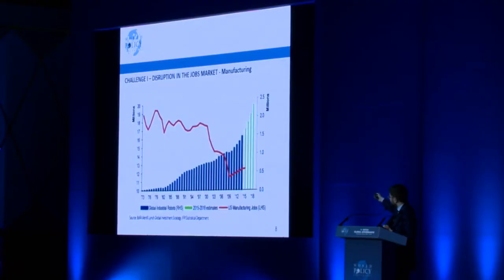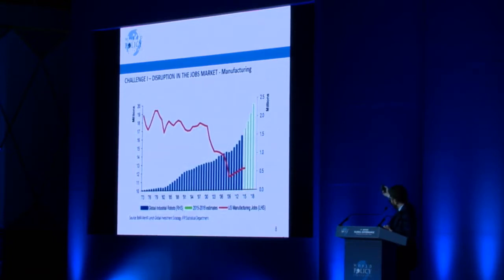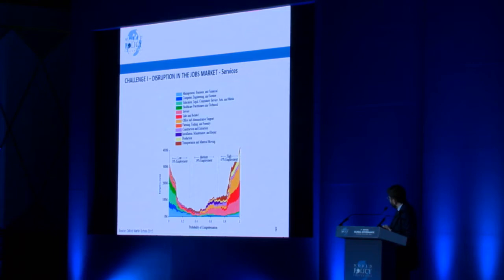This also happened in manufacturing. From the 1970s to 2018, this shows millions of Americans working in manufacturing, and the bars show the installation of robots in factories in the United States. But now it's starting to happen in services.